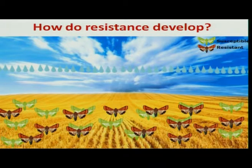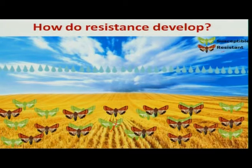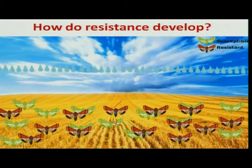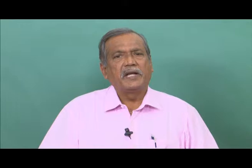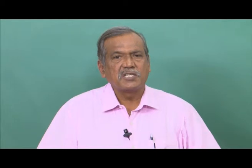This can be clearly explained with the slide photograph. In a given agro-ecosystem there are both susceptible and resistant individuals. When you spray a particular insecticide, the susceptible ones keep getting eliminated while only the resistant ones remain. As this resistant population goes on increasing, even after spraying you notice no decrease in the population, thereby economic damage also increases — that is how you recognize that the insect has developed resistance.